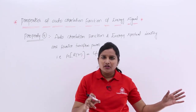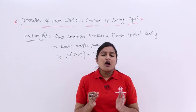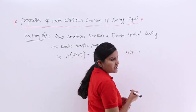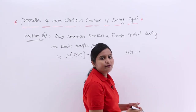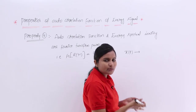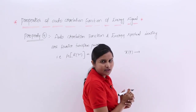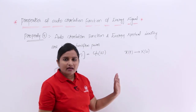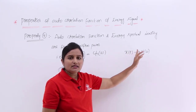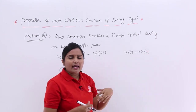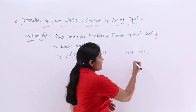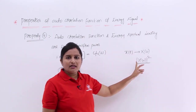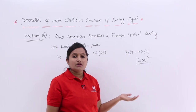For a given signal x(t), the spectrum can be obtained by taking the Fourier transform or Laplace transform. The spectrum is the frequency domain representation of the signal. By squaring the spectrum — that is, taking the modulus of X(ω) whole square — you get the spectral density.